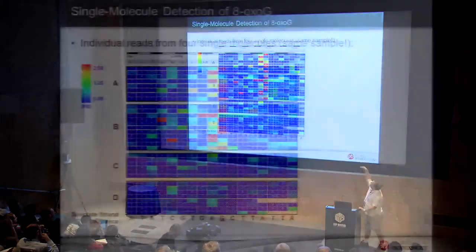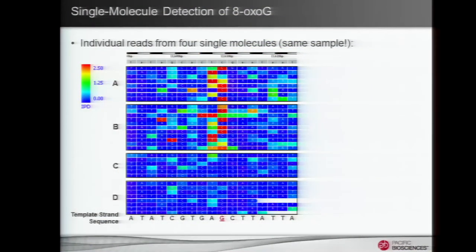Here's an example of getting at single-molecule resolution with that kind of assay. This is four molecules of that sequence from the exact same sample. Since you're able to read that same molecule over and over again, the red marks indicate shifts in the kinetics. Here you can see a location on this molecule that's changed — this is an 8-oxo-G change — the same on this other molecule, but it doesn't exist on other molecules. So we actually get a quantitative estimate of the number of molecules that are modified versus unmodified in the same sample.